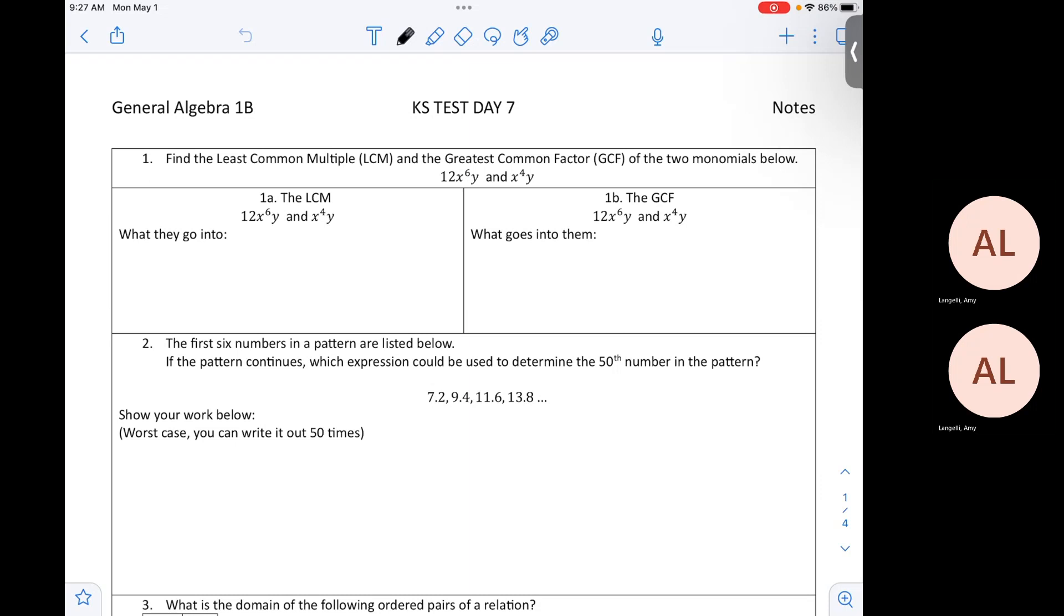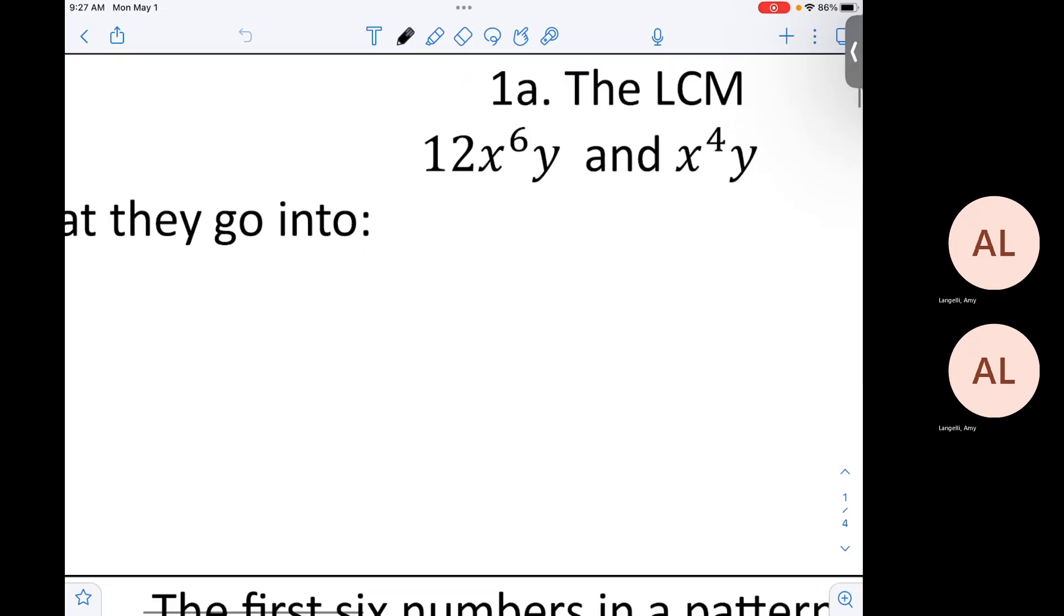To start with though, I'm going to keep going on the GCFs and the LCMs. How do we do LCM of these two items? Remember, there is a 1. It is 12, because the multiples of 12 are 12, 24, 36, et cetera.